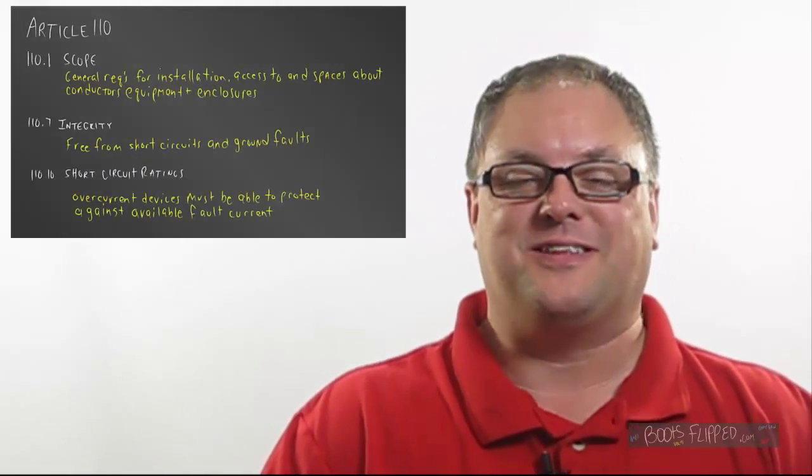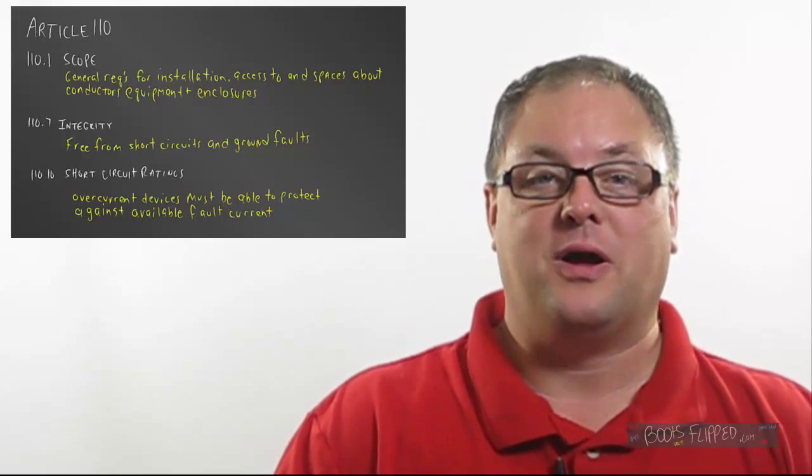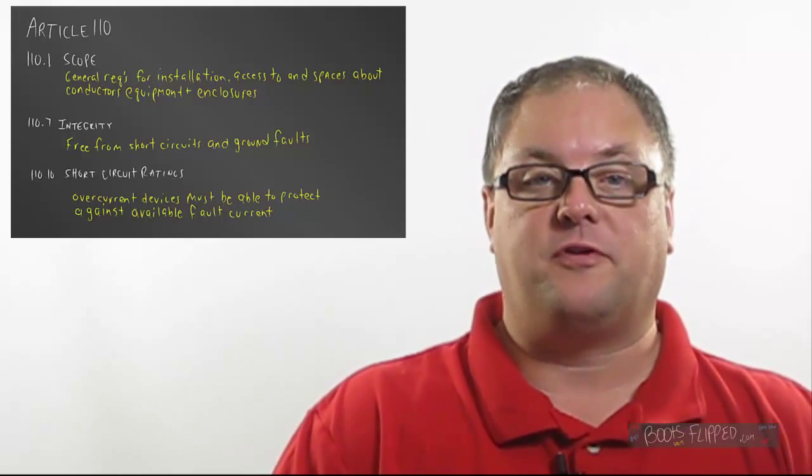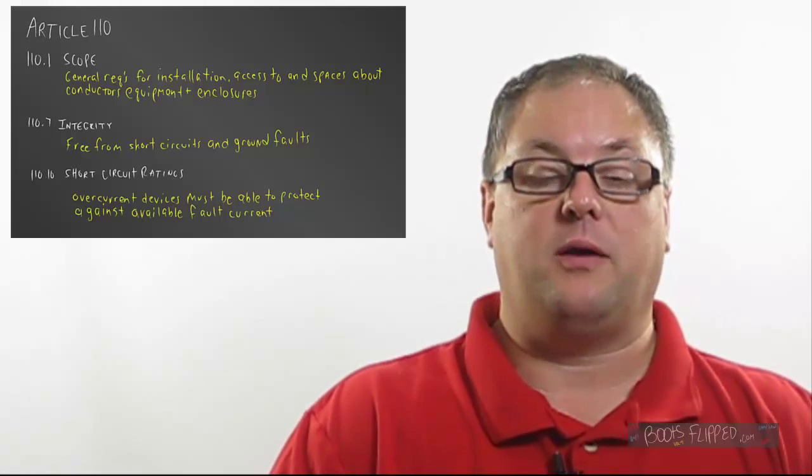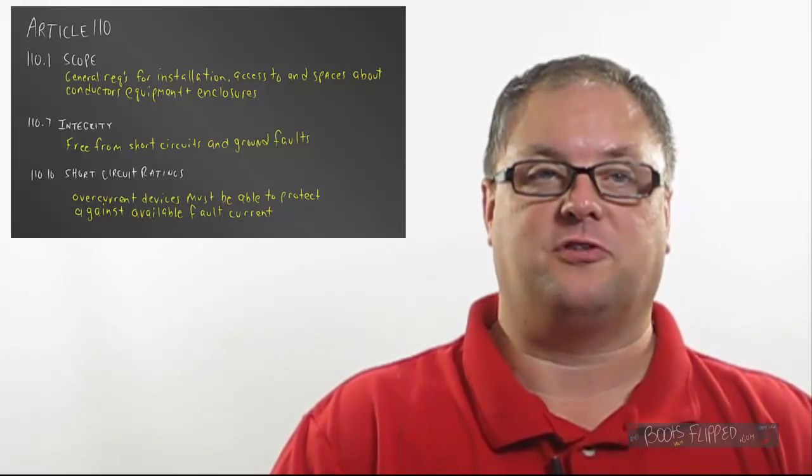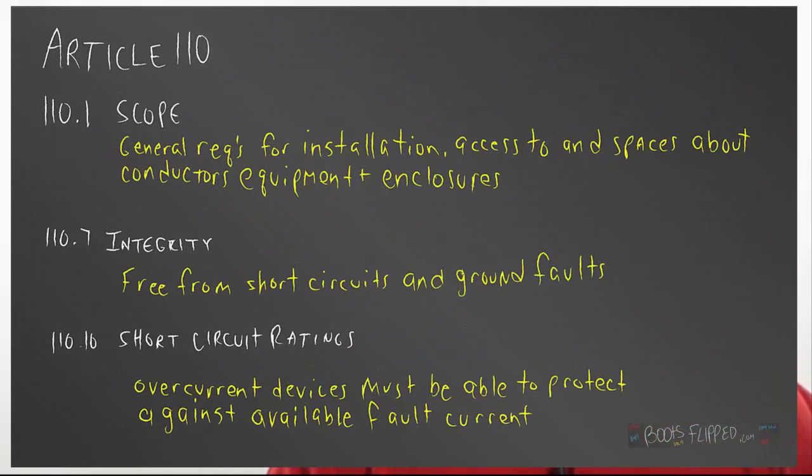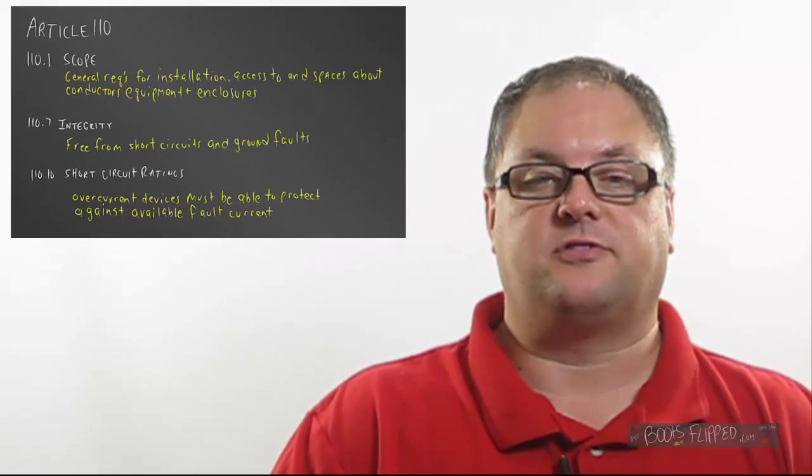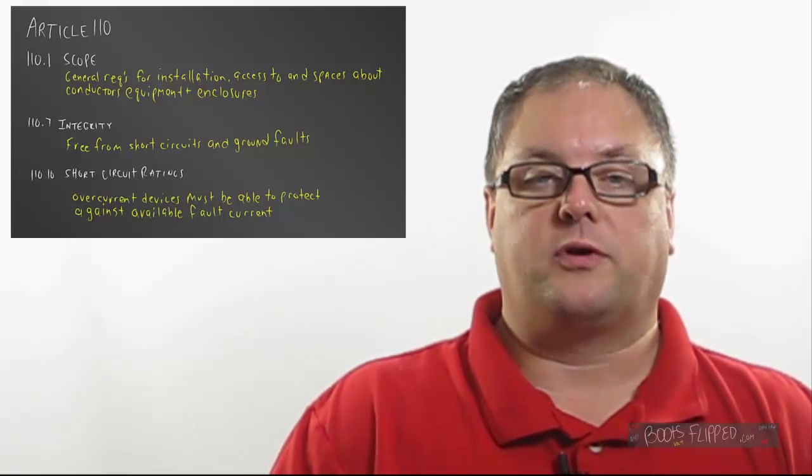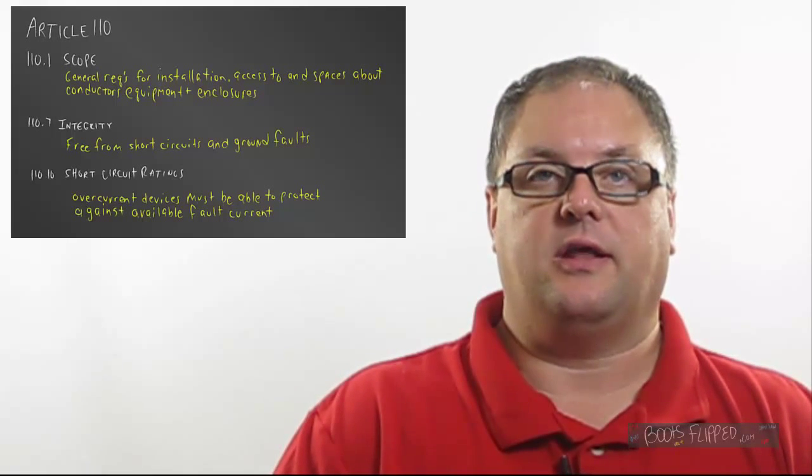Article 110, the biggest thing that we need to discuss first is the scope. Remember, that is the first thing you need to look at in every article that you have to use. Why? Because it helps us make sure we're aiming towards our target. So the scope for Article 110.1 is General Requirements for Installation, Access to Spaces about Equipment and Conductors. That's a lot of information, but basically it's going to let us know about our Working Space Requirements and items like that.